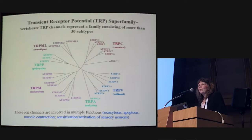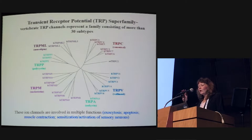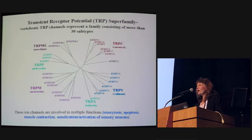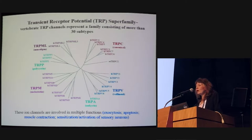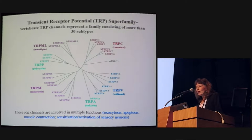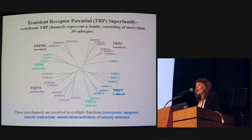In terms of the TRP channel superfamily, vertebrate TRP channels represent a family consisting of more than 30 subtypes, and we know very little about most of these in terms of bladder sensation. Most of these channels are clearly involved in a number of functions, anything from exocytosis to apoptosis, muscle contraction, and certainly activation of sensory neurons.